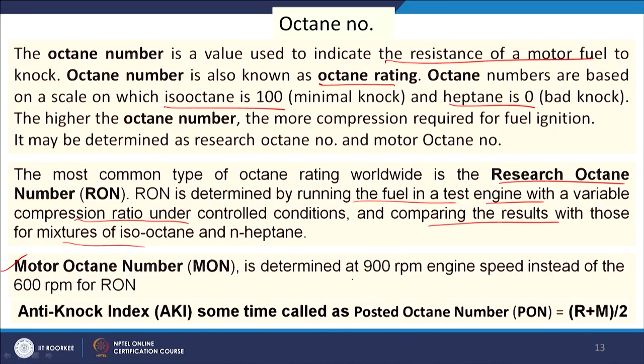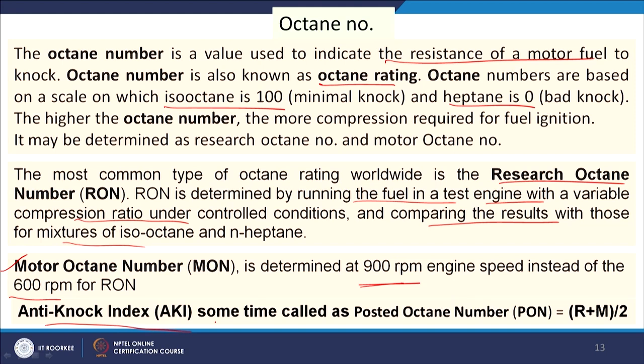When a vehicle is on the road with actual loading, it consumes more energy. Motor Octane Number (MON) is used in this case and is measured at 900 rpm. The anti-knock index is also used in some countries and is defined as (RON + MON) / 2.